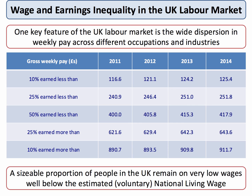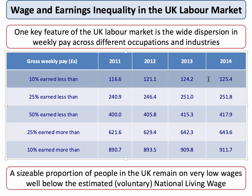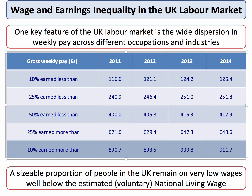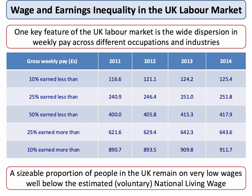A lot of inequality in Britain comes from the labour market. One key feature of the labour market is the huge dispersion in weekly pay across different occupations and industries — we'll do a separate topic video on causes of wage differentials. In the UK, 10% of people earned less than £125 per week in 2014, and at the other end of the income scale, 10% of people earned more than £900 a week in terms of gross weekly pay. So we have quite a wide dispersion in wages and salaries, and that's one of the key causes of income inequality.